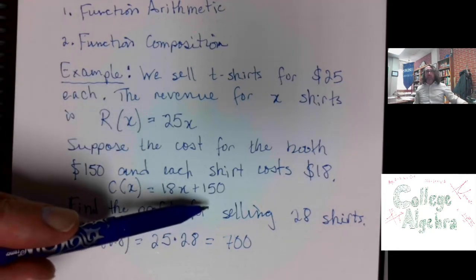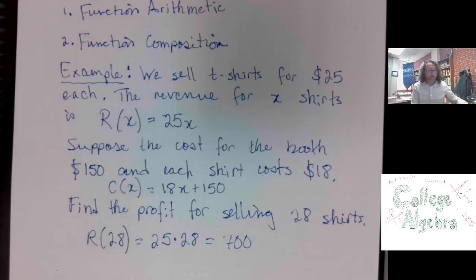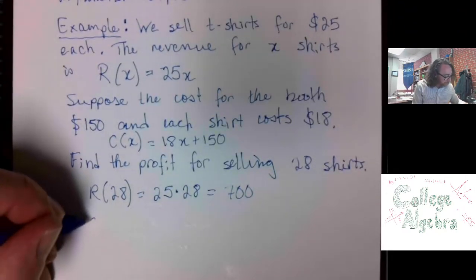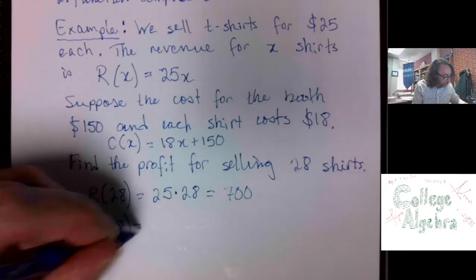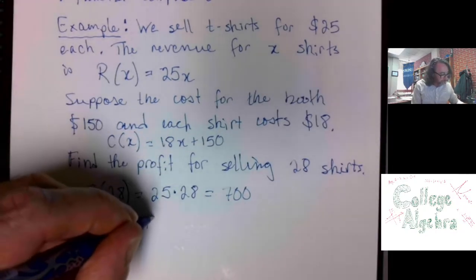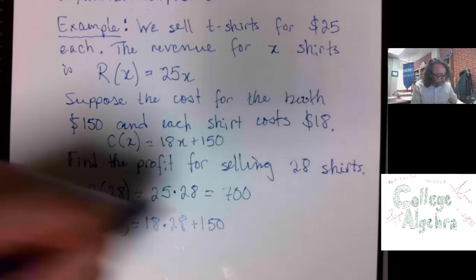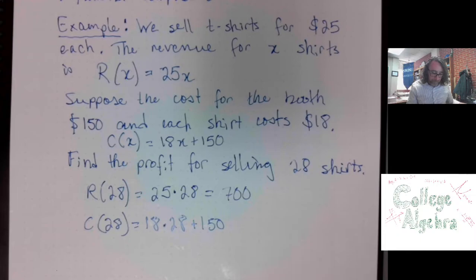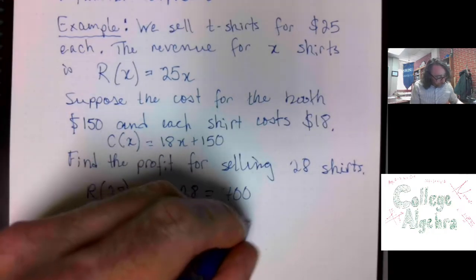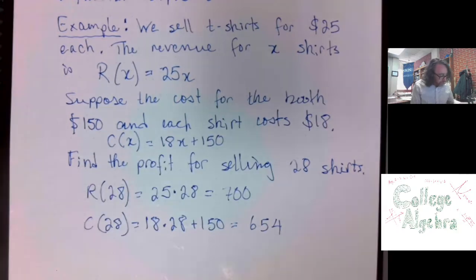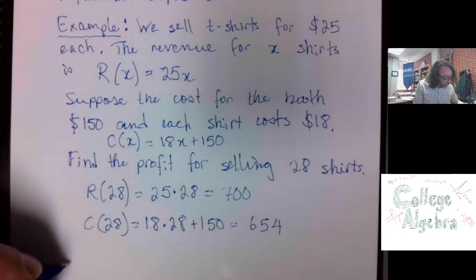But now, of course, we had to lay out money to even get the booth and we have to pay for the shirts. So, we have to account for cost. The cost of 28 shirts, 18 times 28 plus 150. So, the cost for that many shirts is 654.